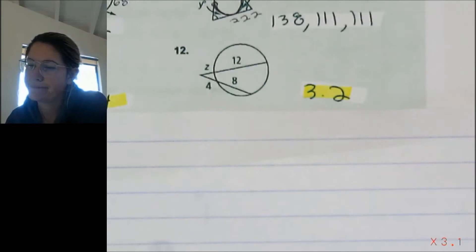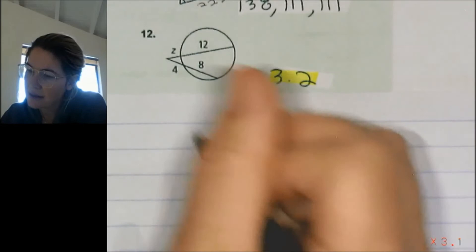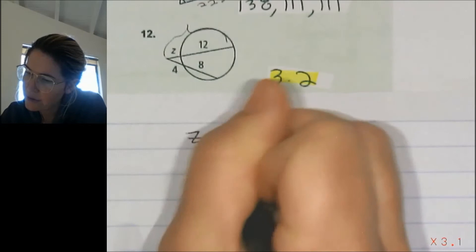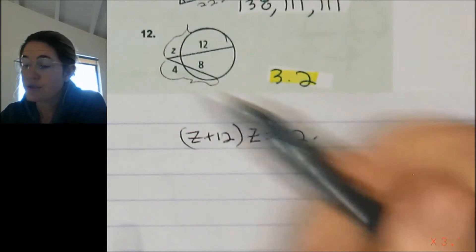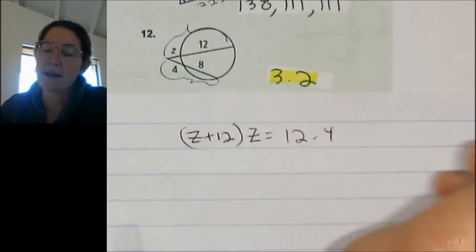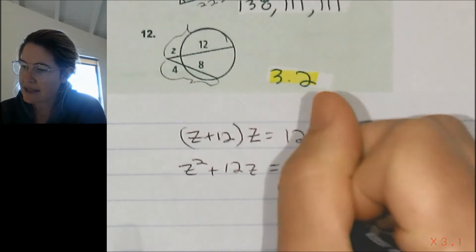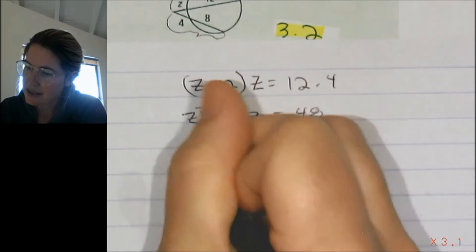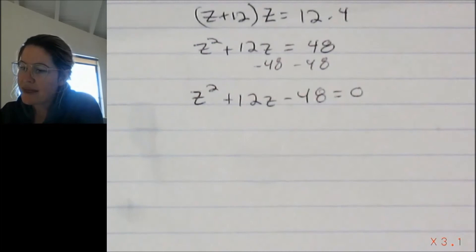All right, number 12, I think is also going to give us a little bit of factoring that we're going to have to remember. So we have two guys that are intersecting outside. So it's the whole secant segment, this whole thing right here is z plus 12, times the external secant segment z is equal to the whole secant segment 12 times the external secant segment 4. It's good to cover factoring, that's what you're going to do in algebra 2 anyway. Okay, so we're going to get z squared plus 12z is equal to 48. And I'm going to minus that 48 to the other side setting everything equal to 0 just like before. z squared plus 12z minus 48 equals 0.